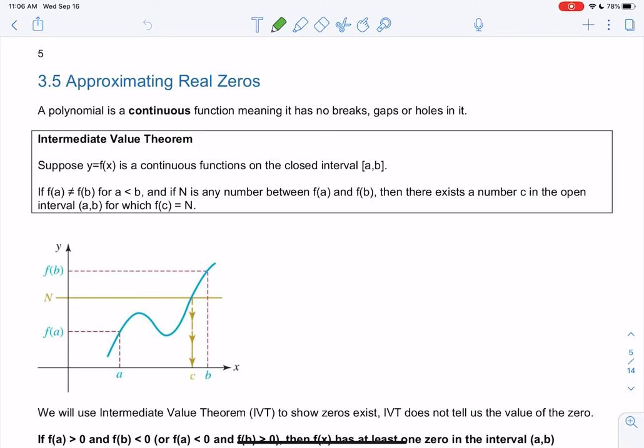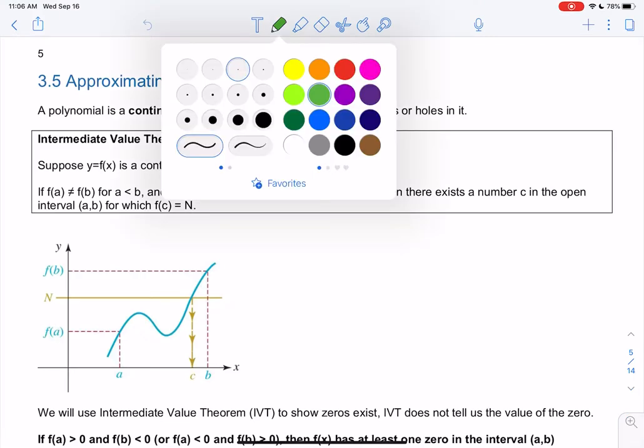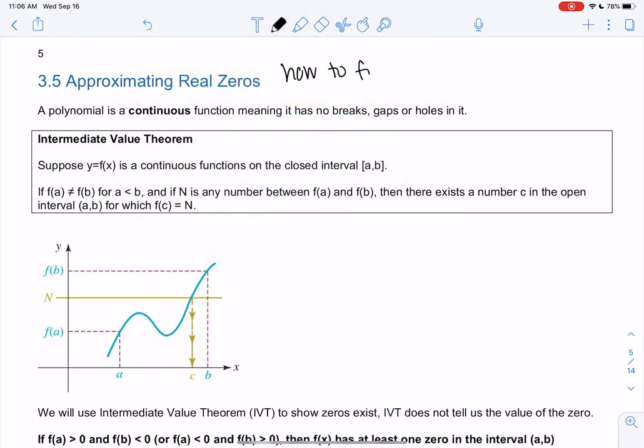Alright, so section 3.5 is what we're going to do when we just can't find any zeros. Last section we looked at finding rational zeros, and once we got down to a quadratic we could use the quadratic formula. But what if neither of those work? This section is how do we find them when the other methods don't work. It's kind of like a last resort.